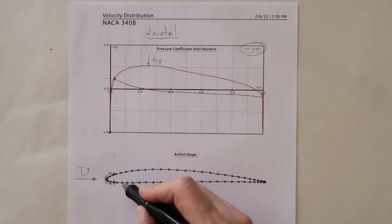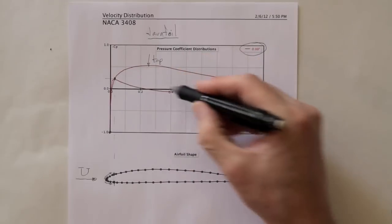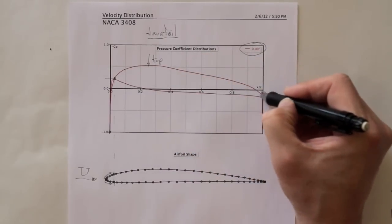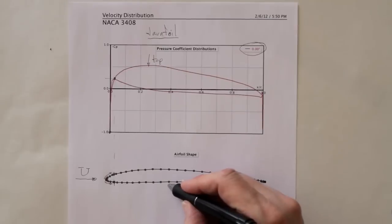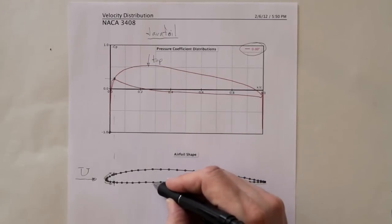But on the bottom we very rapidly see that negative pressure dropping back down to zero and actually becoming a little positive. So the pressure in this region here is actually a little bigger than atmospheric pressure.